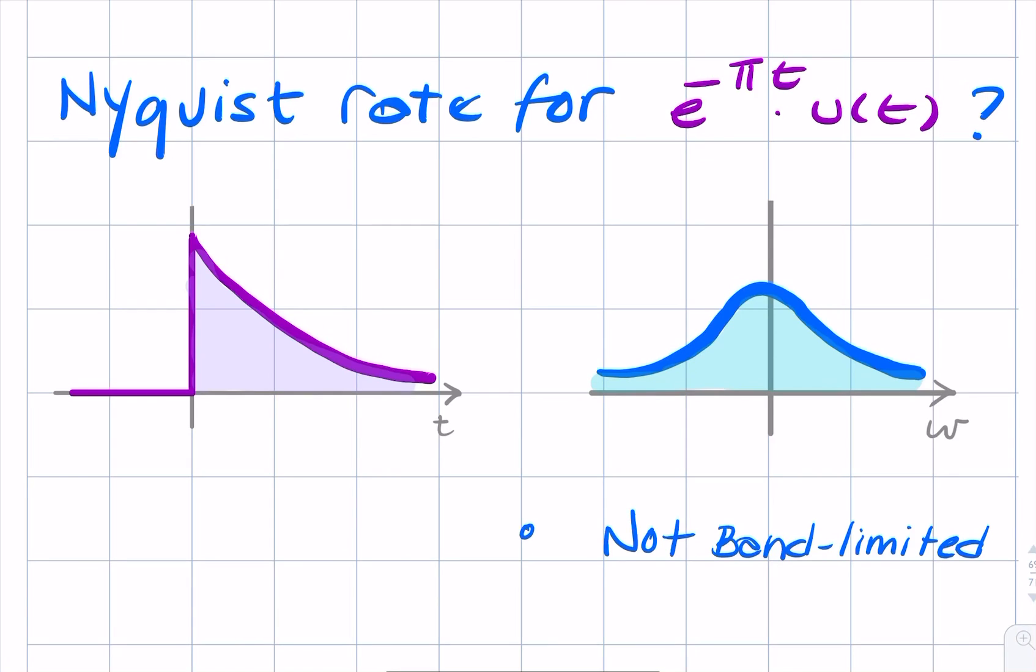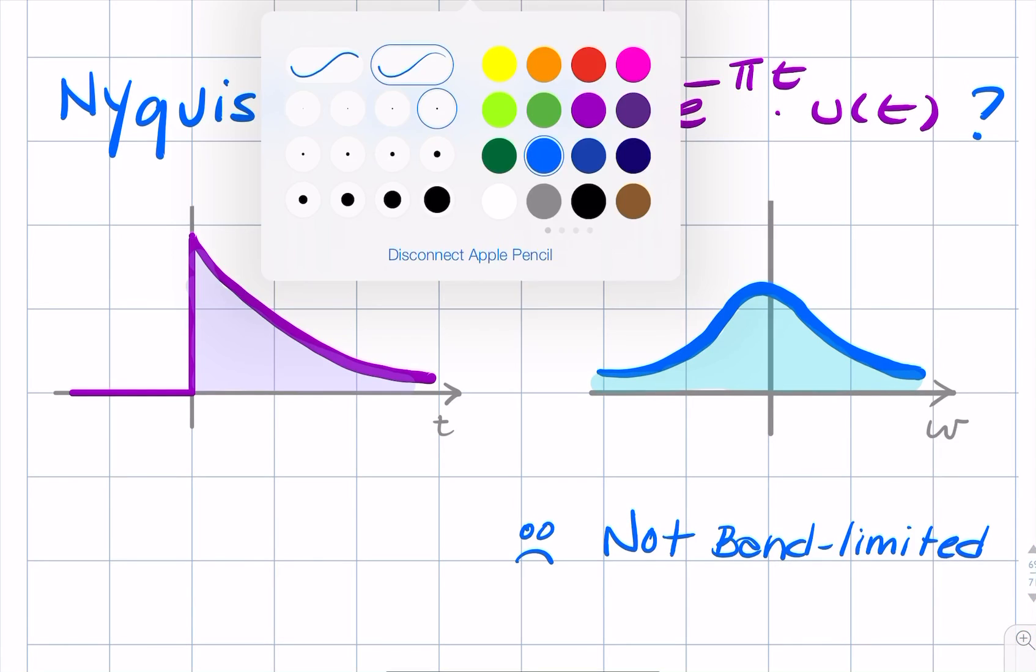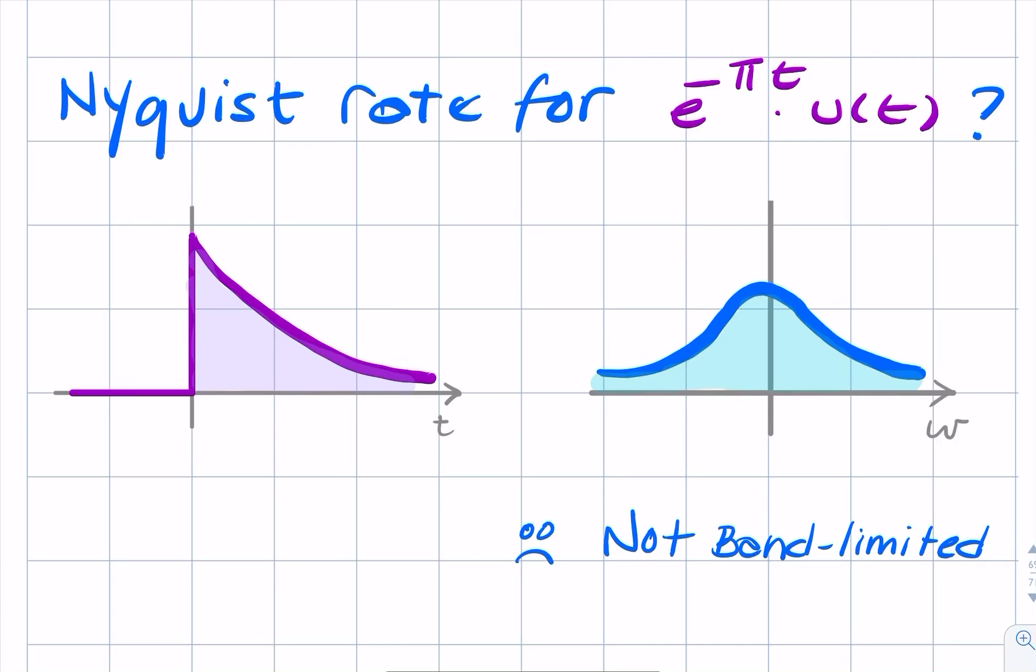And that is a problem for us, because normally the Nyquist rate would be twice the bandwidth. So what we're going to use instead is an approximation.